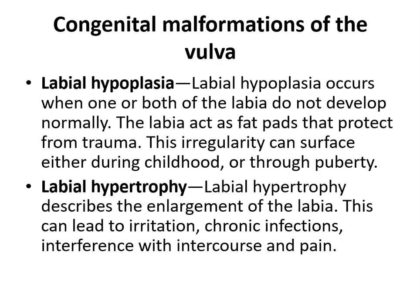Good morning. Today we will continue with the congenital malformations of the female reproductive system. In the previous class we discussed congenital malformations of the vagina. Here we will start with the congenital malformations of the vulva. Under the malformations of the vulva there are mainly two conditions: labial hypoplasia and labial hypertrophy.